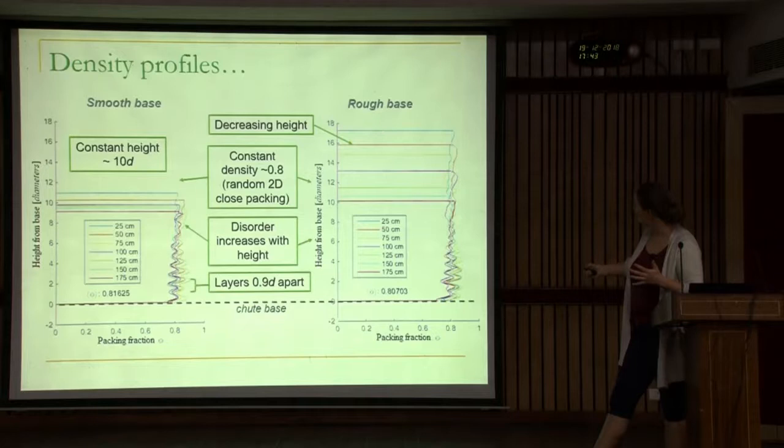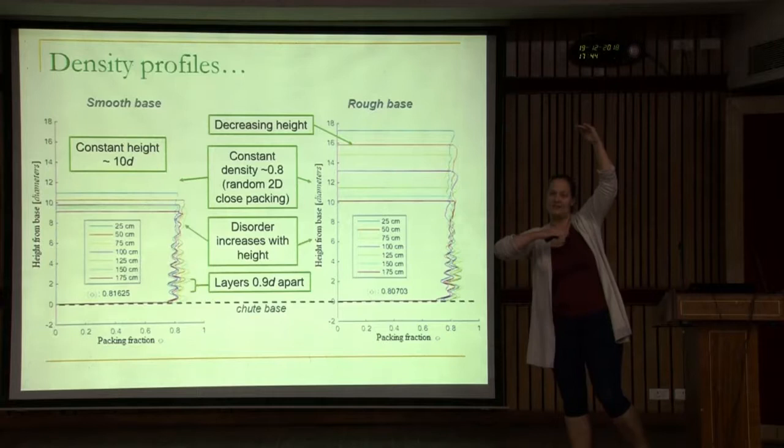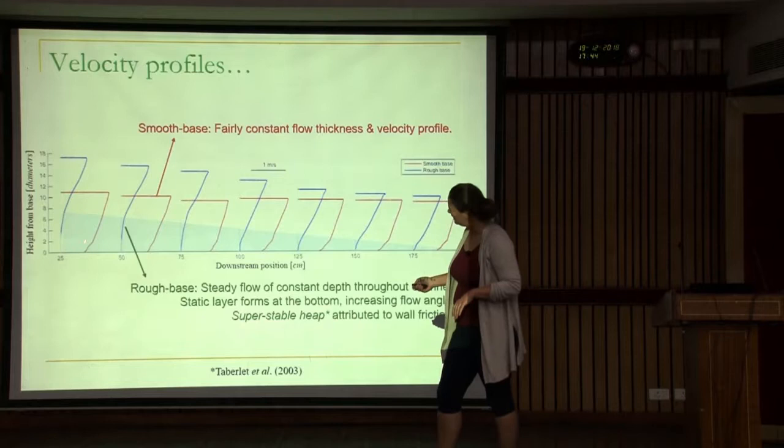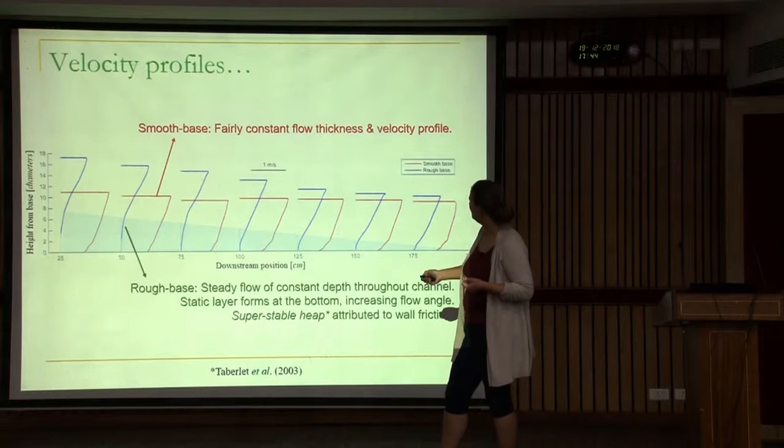For the rough base, you still see the wiggles, but you also see a decreasing height — close to the origin the flow is very thick and as it goes down it becomes thinner. This is related to the fact that the bottom layer is almost static due to friction, while the top layer is moving a lot.